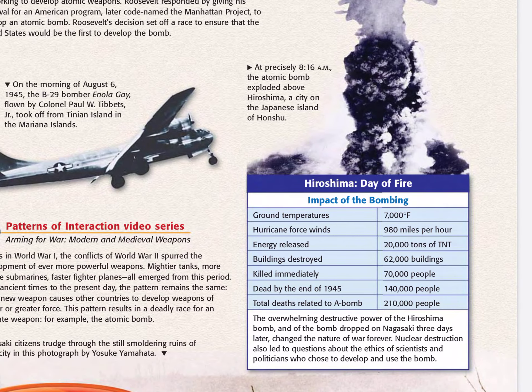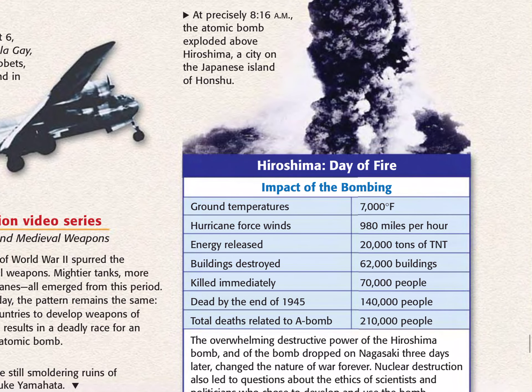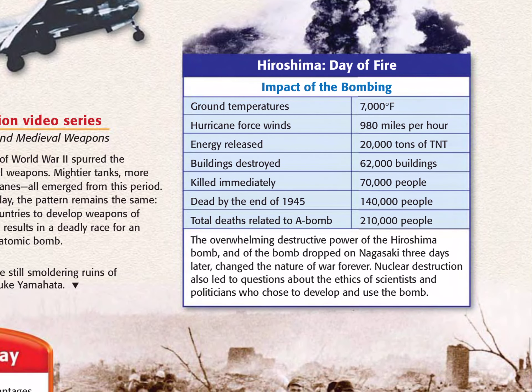Looking at the chart — Hiroshima Day of Fire: impact of the bombing. Temperatures on the ground when the bomb went off were 7,000 degrees, which is why everything within a certain radius was basically incinerated. Hurricane force winds of 980 miles an hour released 20,000 tons of TNT, destroyed 62,000 buildings, and killed 70,000 people instantly. By the end of the year, 140,000 people were dead, either from wounds or radiation poisoning. The total deaths related to the atomic bomb were 210,000.